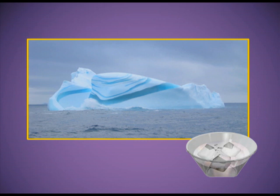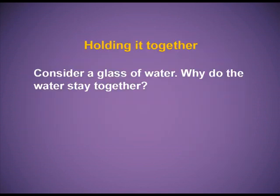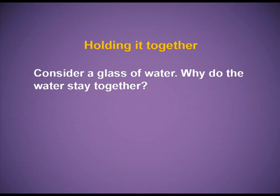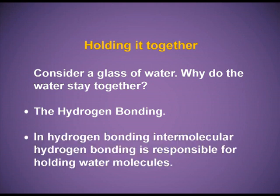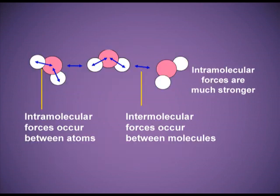Two important properties of water: first, consider a glass of water — why does water stay together? The answer is intermolecular hydrogen bonding. The blue arrows show intramolecular forces, which are forces between atoms within the same molecule — the covalent bonds between oxygen and hydrogen. Intermolecular forces occur between different molecules. These intermolecular forces are responsible for holding the water molecules together in a glass, bucket, or any container.